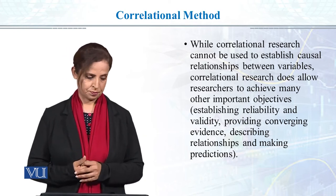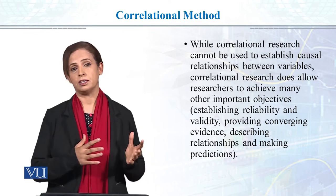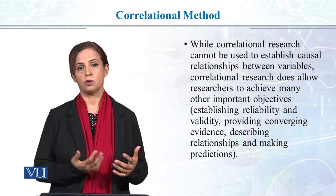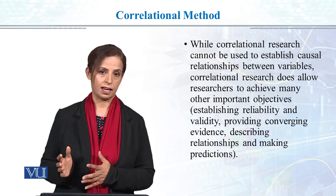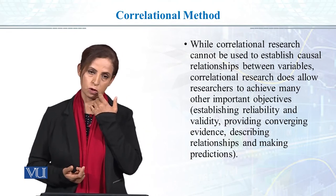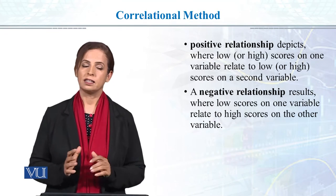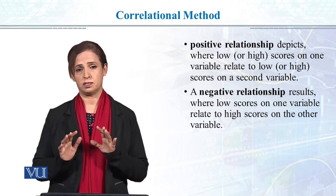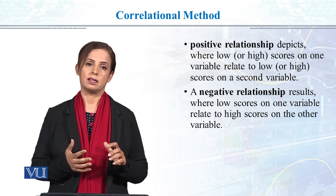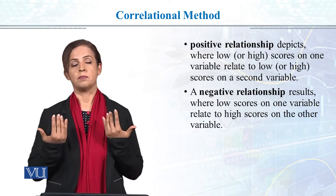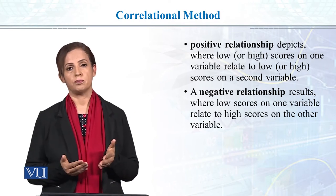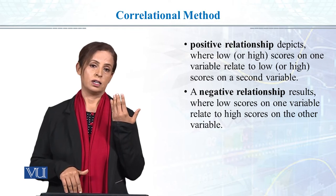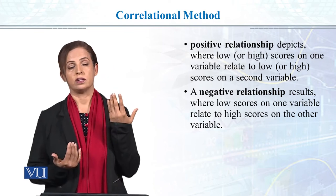For example, what is your lifestyle and what is your health relationship? People who eat healthy versus those who eat junk food, or those who exercise every day versus those who don't — we can answer many such questions. Correlation ranges from 0 to 1: 0 means no correlation, and 1 means perfect positive or negative correlation. A positive correlation means if one variable increases, the other also increases. A negative correlation means if one goes up, the other goes down — like more smoking leads to decreased health.